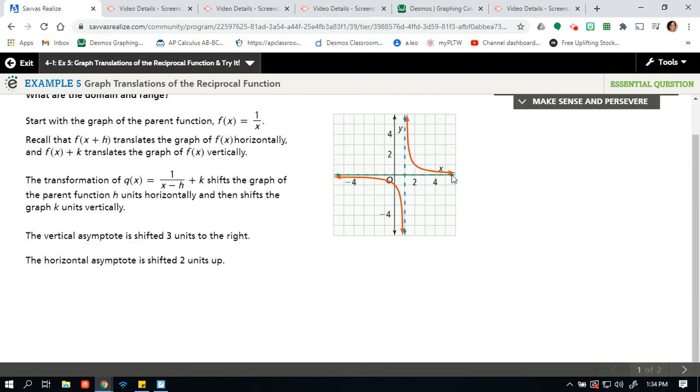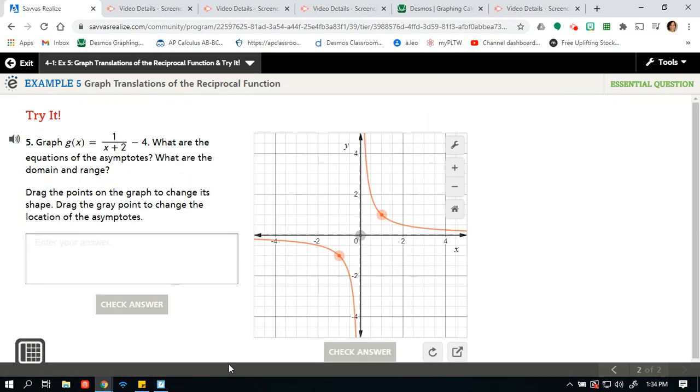It keeps going, talks about the shifts. Oh, this is nice—it does have an animation. It's better than my animation, but that's moving over three and up two, and there's where it cannot equal because it's not going across this blue or green line. So you want to graph g of x equals one over x plus two minus four. What are the equations of the asymptote? Again, x equals and y equals for the vertical and horizontal. Then drag the points on the graph to change the shape. Drag the gray point to change the location of the asymptote.